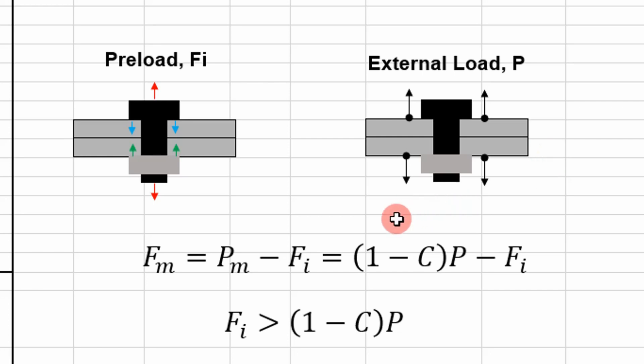So what we're really evaluating when we evaluate joint separation is we're comparing the preload to the external load on the member portion of it. The force felt by the member is going to be equal to the external load transferred to the members, which is going to be in tension, minus the preload force, which is going to be in compression.